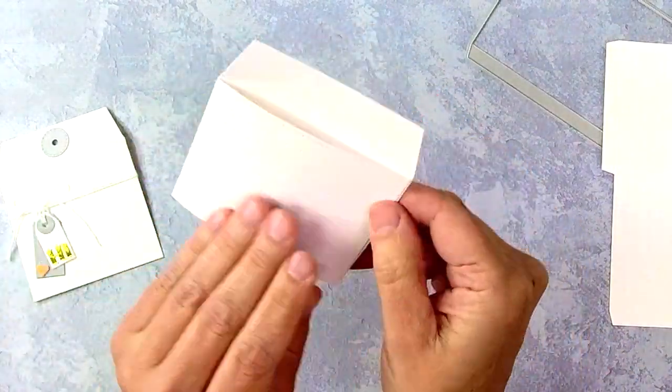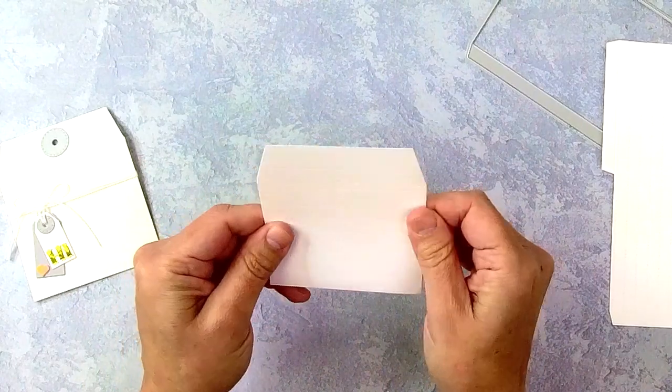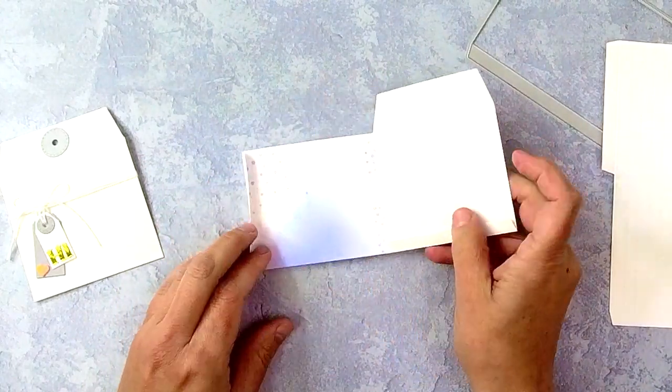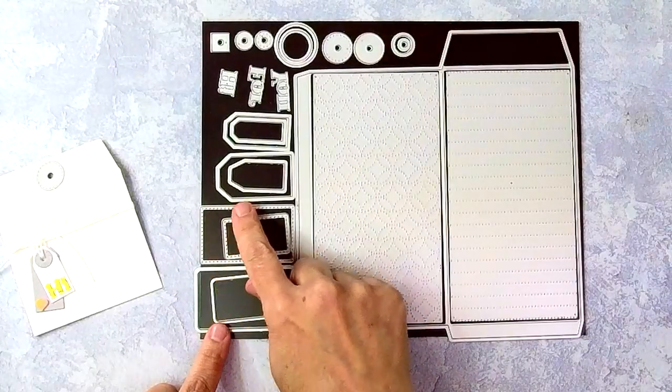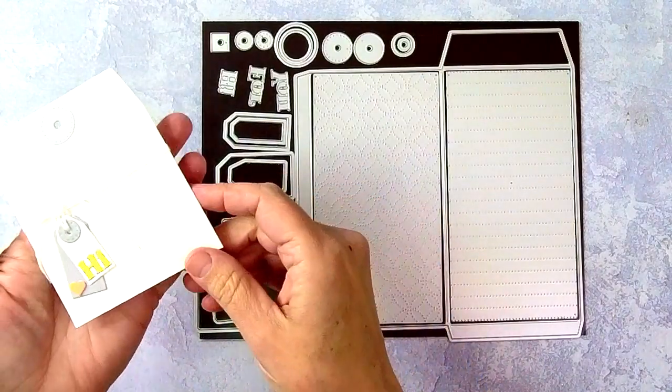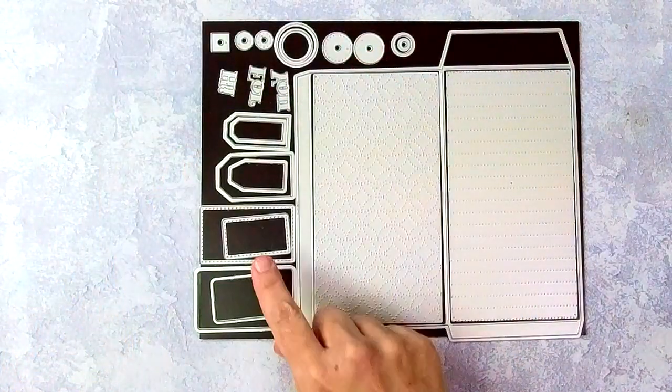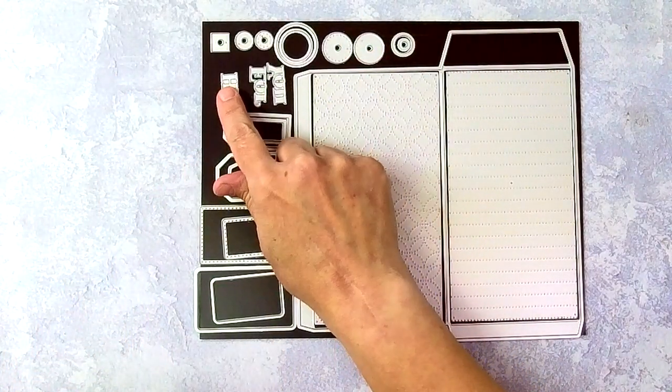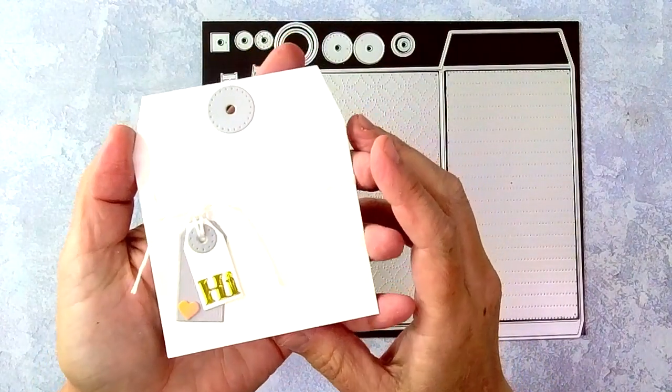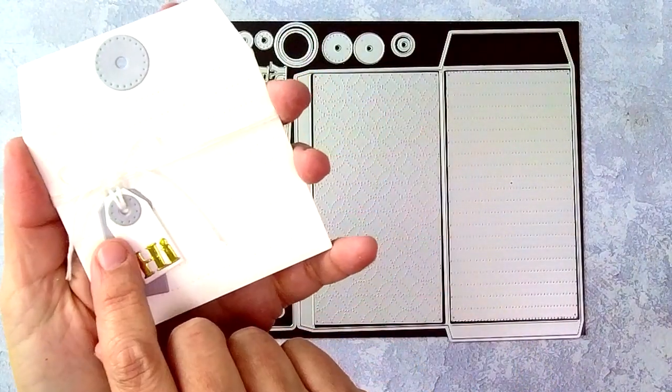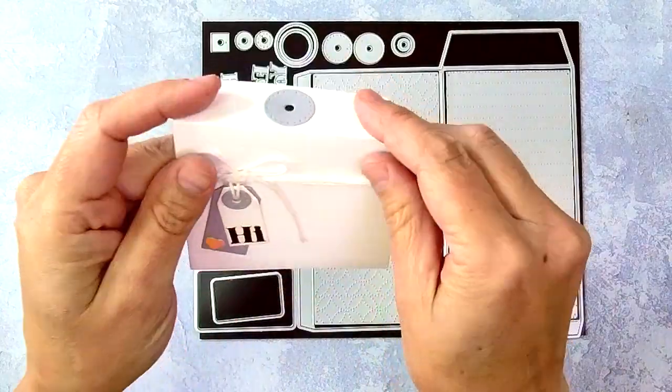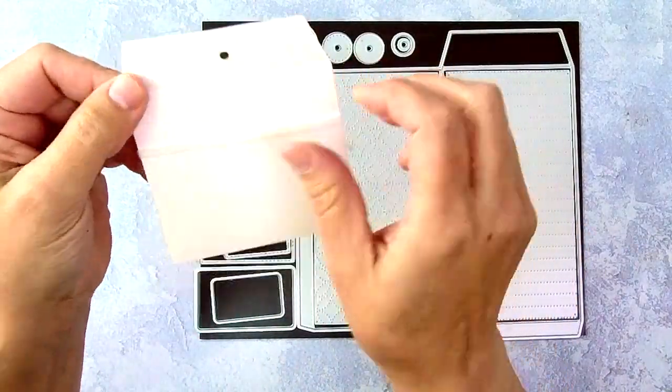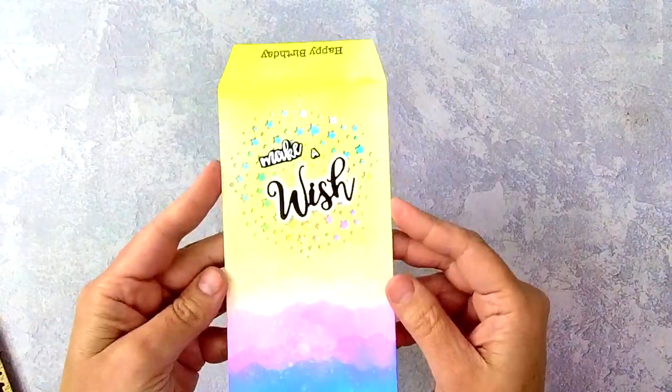This is textured on both sides, and then you can use your embellishments from the die set to decorate your envelope. So here I've used two of the tags and offset them a little bit, and then I used the hi word die in gold on top of that, and then used some of the circles that you can see up there at the top to create a closure and then to embellish the tag.